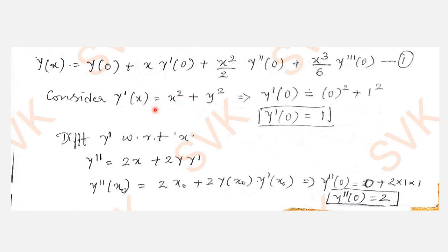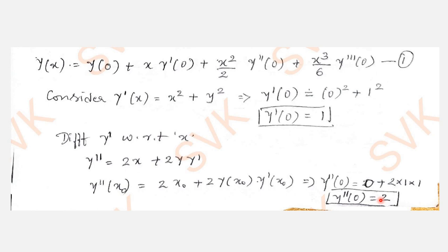Differentiating y' with respect to x: y'' = 2x + 2y·y' (applying the chain rule). Substituting the initial condition — x₀ = 0, y(x₀) = 1, y'(x₀) = 1 — we get: y''(0) = 2(0) + 2(1)(1) = 2.